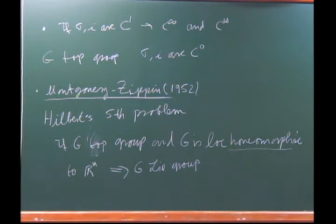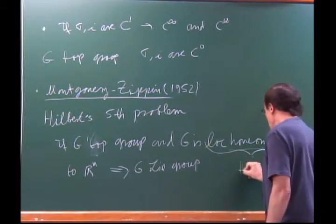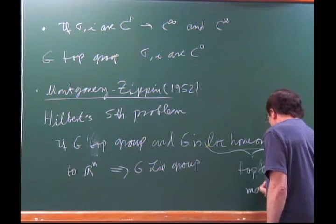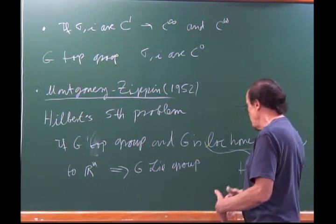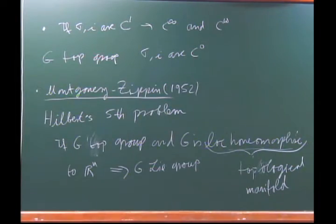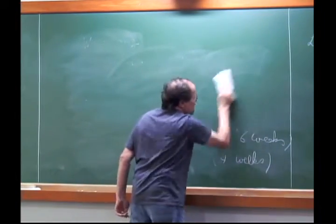A space locally homeomorphic to ℝⁿ is called a topological manifold, and there's a whole theory of topological manifolds similar to differential manifolds. For Lie groups, the Montgomery-Zippin theorem says there's no difference: a topological group that is locally Euclidean must already be a smooth manifold — another amazing property of the combination of manifold and group structure.